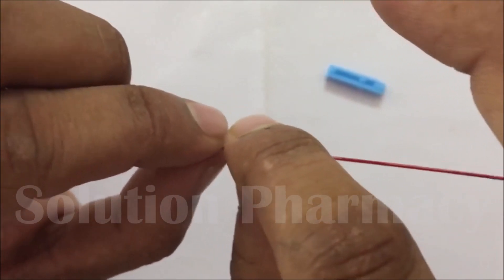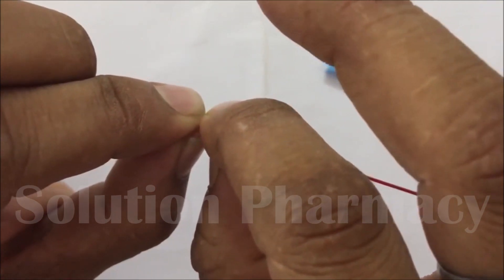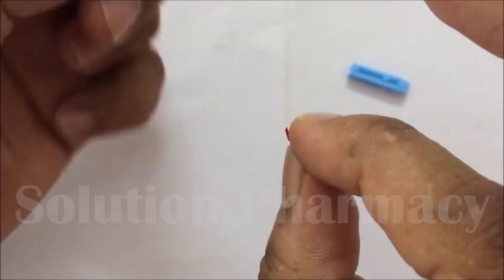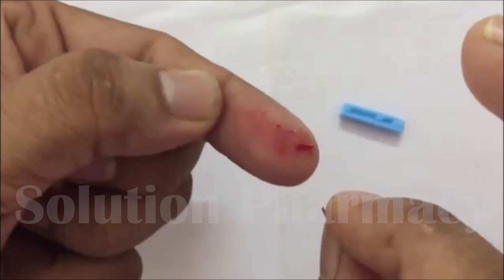After 30 seconds, carefully break a small portion of the capillary tube from one end and observe for blood clot formation, meaning the formation of fibrin thread-like structures. Here you can see the blood clot is not formed.